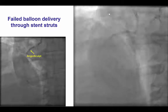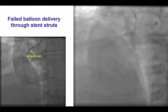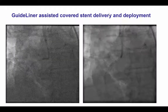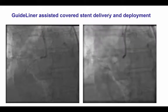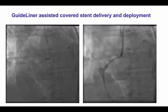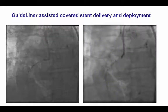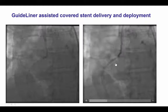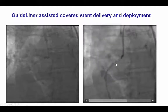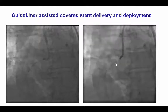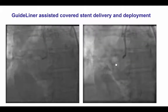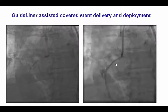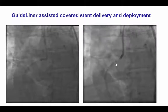We were finally able, with a lot of difficulty, to deliver an angiosculpt balloon, which eventually improved the stenosis, and then we were able to advance a guideliner to the mid-right coronary artery, and deploy a GraftMaster covered stent at the site of the perforation. It is important to know that an 8 French guideliner is needed to deliver the covered stents — they would not fit through a 6 or 7 French guideliner, with the potential exception of a 7 French if they are preloaded before the guideliner enters the guide.